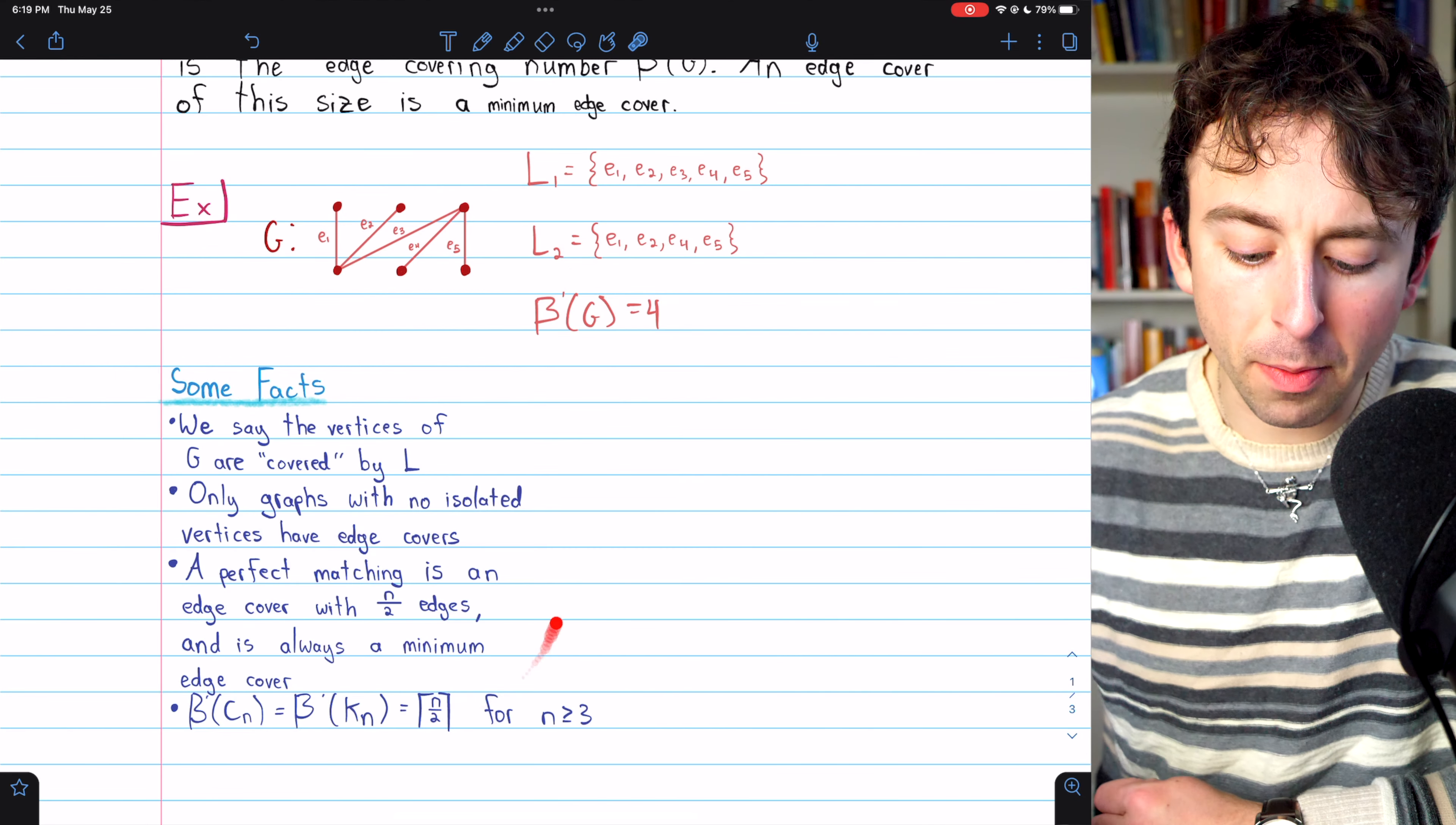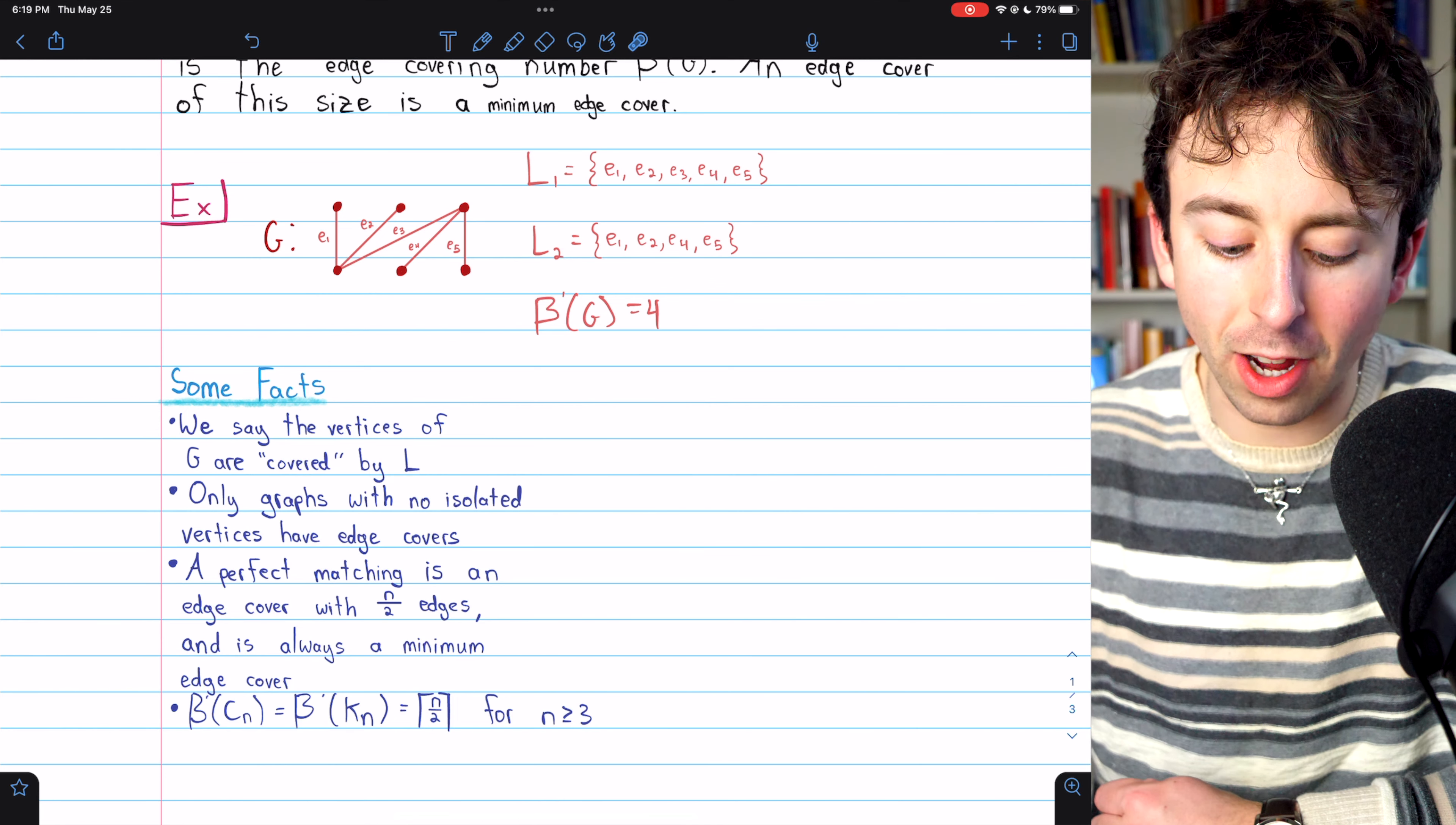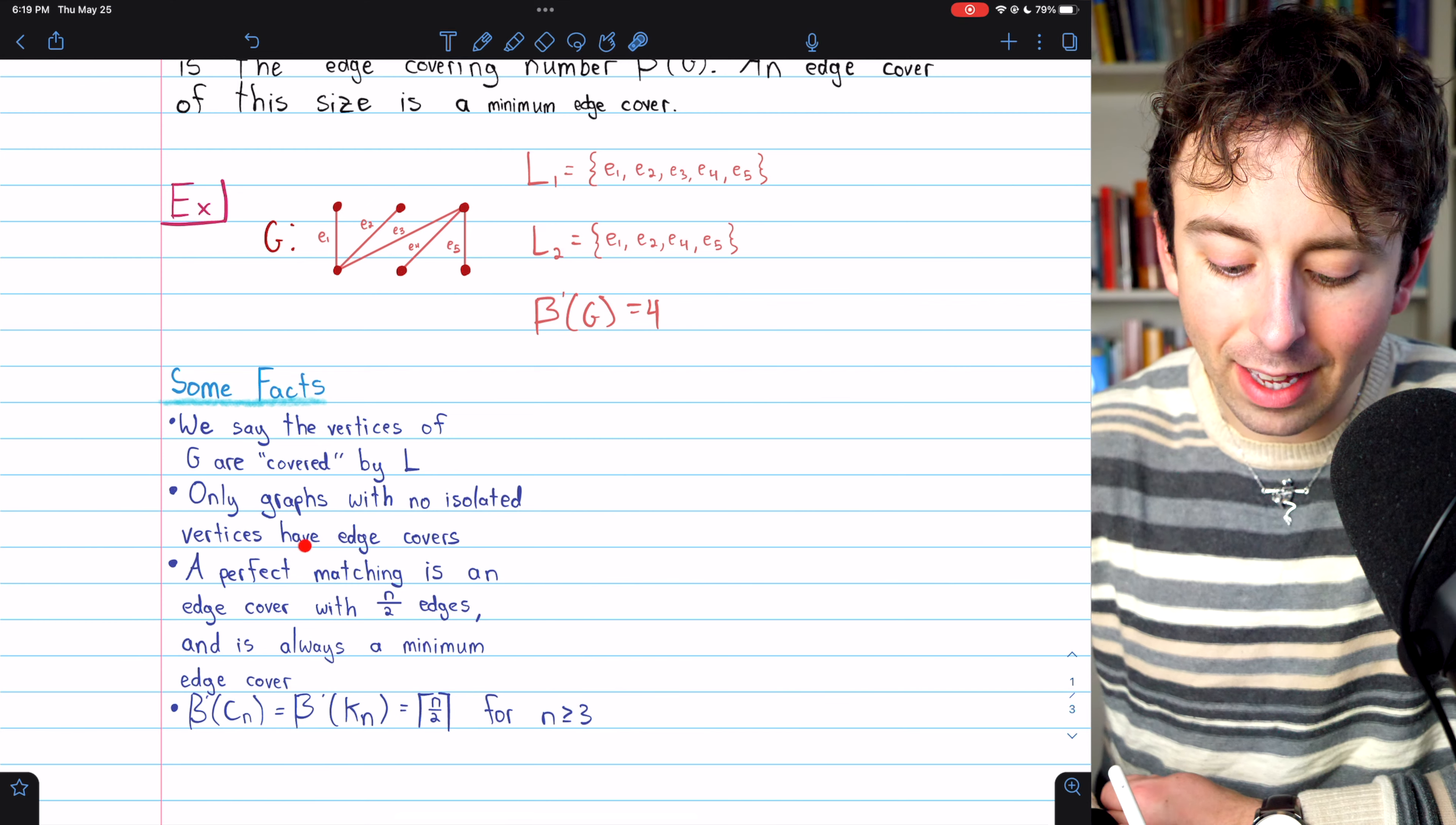Here are some basic facts about edge covers. We say that the vertices of a graph are covered by its edge cover. Only graphs with no isolated vertices have edge covers.